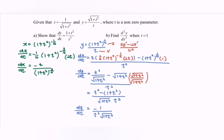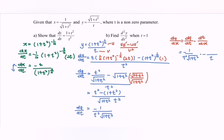Next, substitute into dy/dx equals dy/dt multiplied by dt/dx. So dy/dx equals negative 1 over (t squared times the square root of (1 plus t squared)), multiplied by dt/dx. To get dt/dx we flip dx/dt, giving us (1 plus t squared) to the power of 3 over 2 over negative t.